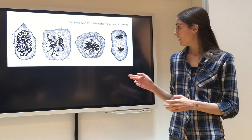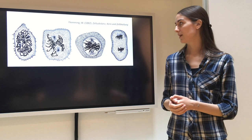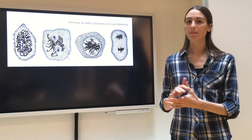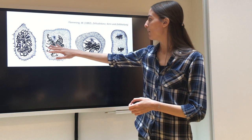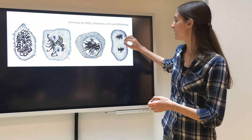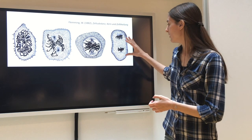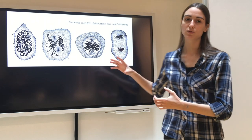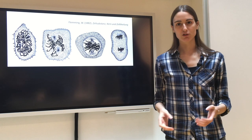Famously, Walter Fleming published these and other incredible illustrations in 1882. They depict the process in amazing detail, showing the chromosomes first moving to the center of the cell and then separating into two sets which migrate to opposite poles. Later, when the cell divides down the middle, these two sets — exact copies of each other — become the genome of the daughter cells.